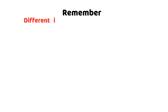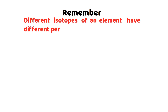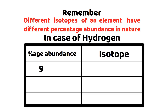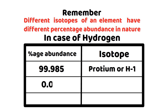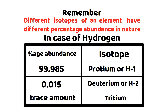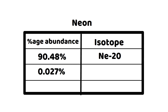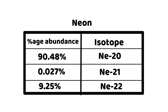Different isotopes of an element have different percentage abundances in nature. For hydrogen, 99.985% exists as protium, 0.015% as deuterium, while tritium is present in trace amounts. For neon, 90.48% exists as neon-20, 0.27% as neon-21, and 9.25% as neon-22.